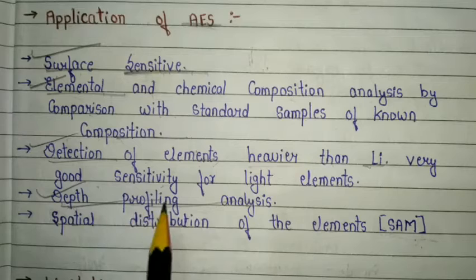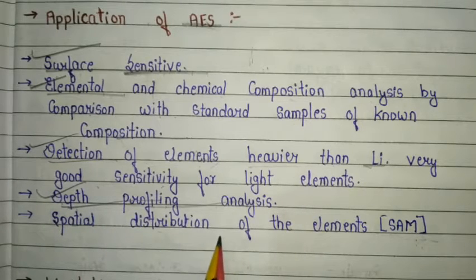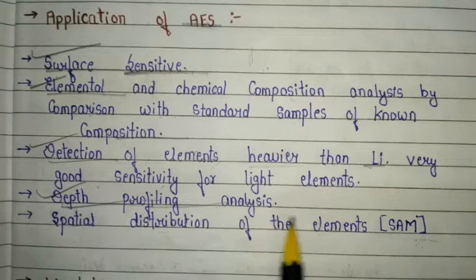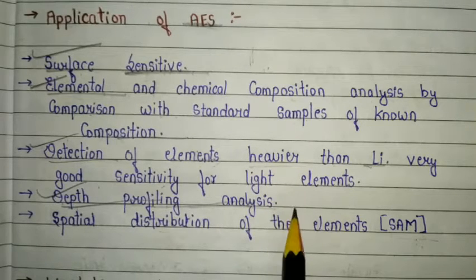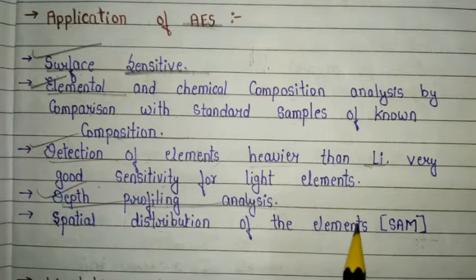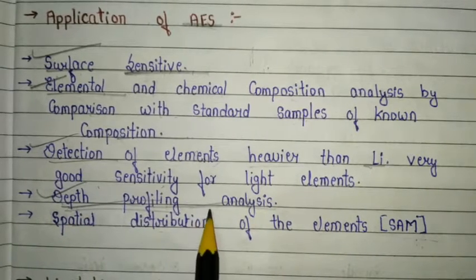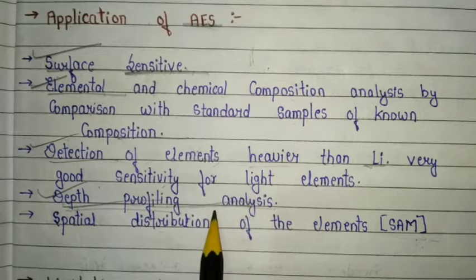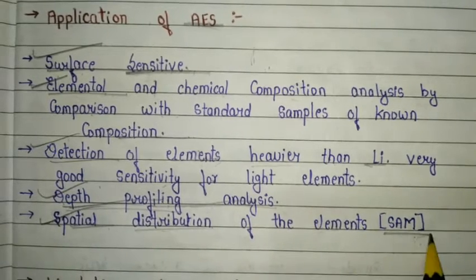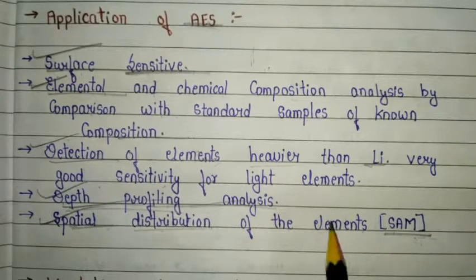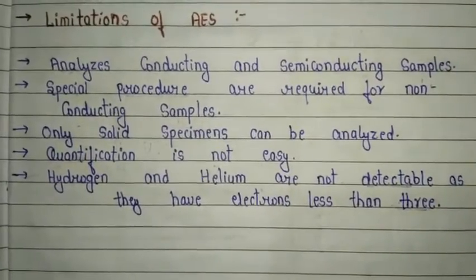The fourth application is depth profiling analysis. Depth profiling is a process where the elemental or chemical content of a sample is measured as a function of depth. Many analysis techniques that perform depth profiling use a beam of ions such as O2⁺, Cs⁺, and Gallium. The fifth application is spatial distribution of elements. SEM and Auger electron spectroscopy are both electron beam techniques based on the Auger effect.